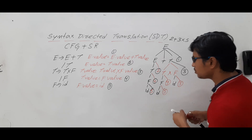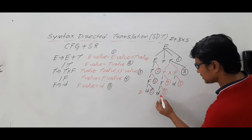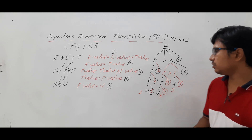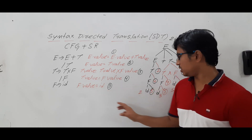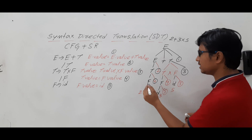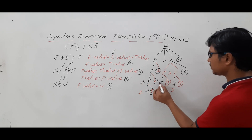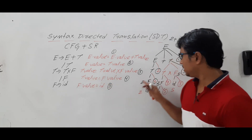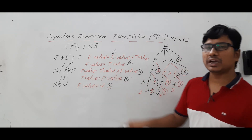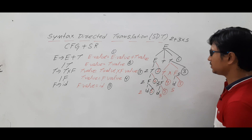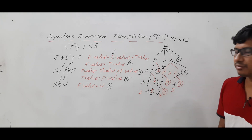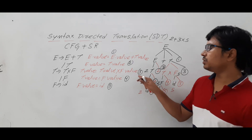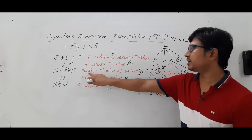For 2 plus 3 into 5, the ID values are: here it is 2, here it is 3, and here it is 5. Rule number five says F dot value is equal to ID, so you will get 2 here, 3 here, and 5 here. Now T determines F, which is T dot value is equal to F dot value — so you get 2 here, 3 here, and you already got 5.